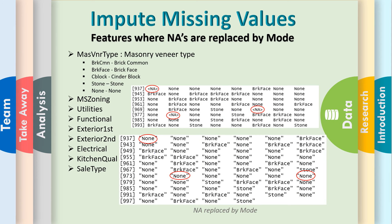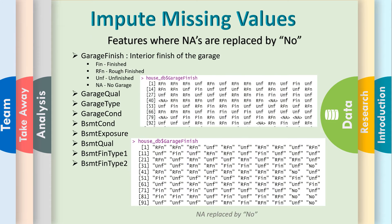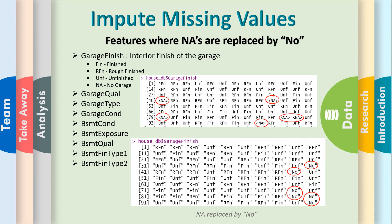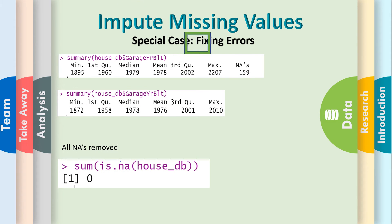Features where NAs are replaced by mode are mostly categorical features. Features where NAs are replaced by none are mostly factorial features. This is the special case of rectifying errors, after which our dataset has zero missing values.